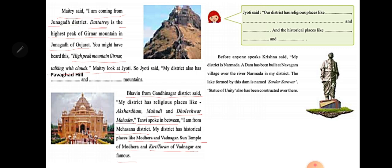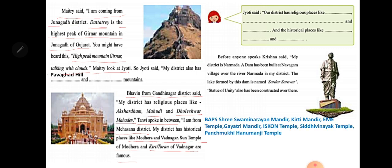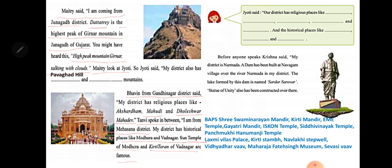Jyoti said: our district Vadodara has religious places like Shri Swaminarayan Mandir, Kirti Mandir, EME Temple, Gayatri Mandir, ISKCON Temple, Siddhi Vinayak Temple, and Panchamukhi Hanumanji Temple. Historical places include Laxmi Vilas Palace, Kirti Stambh, Navlakhi Stepwell, Vidyadhar Vav, Maharaja Fateh Singh Museum, and Sevasi Vav.